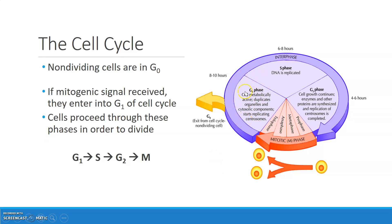The G1 phase leads into S phase, or synthesis phase of interphase, which is where DNA replication takes place. In G1, we've doubled the organelles and biomolecules; in S phase, we double the genetic information to make two new cells. Then S phase progresses into G2 phase, where replication of centrosomes — the microtubule organizing centers — is completed. Other proteins and enzymes necessary for mitosis are also synthesized and doubled in preparation for the M phase, or mitosis.